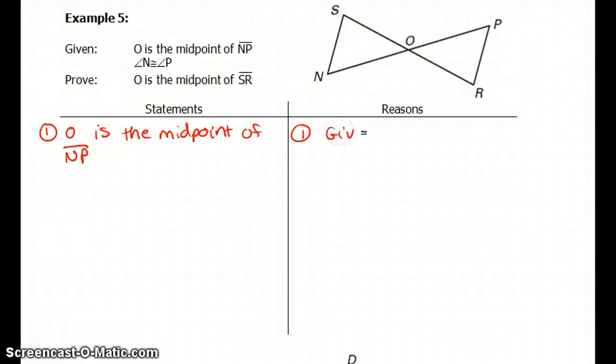And that's given. And also angle N is congruent to angle P. So the next thing I'm going to do is mark the given. So here on the diagram, I'm going to say that N is congruent to P. These two angles are congruent.